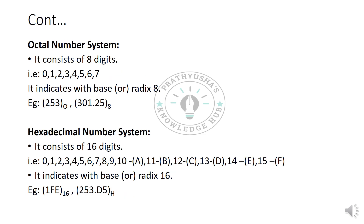Coming to the octal number system — octal means it is represented with 8 digits, from 0 to 7. The octal base or radix is 8. For example, the number 253 in octal can be represented with the letter O for octal, or with the subscript 8.